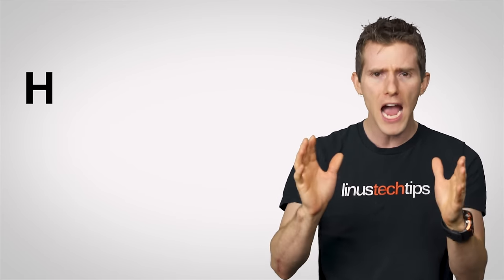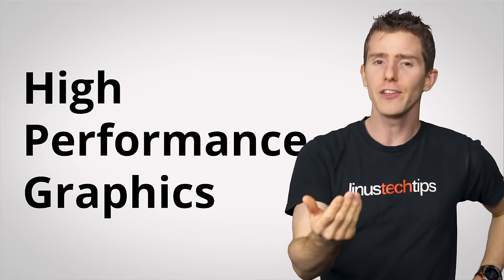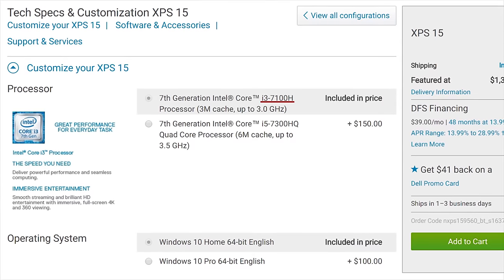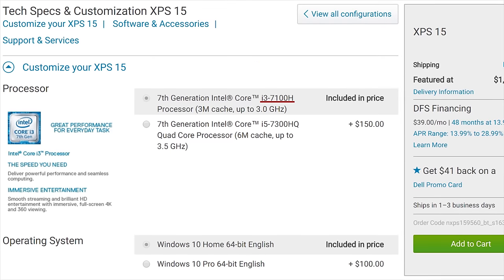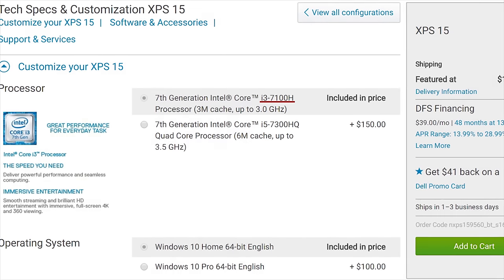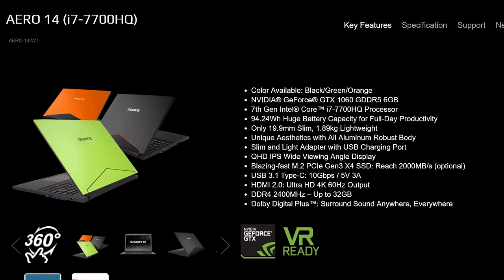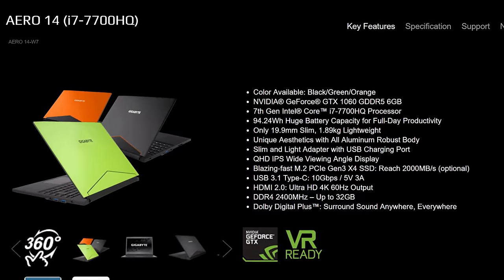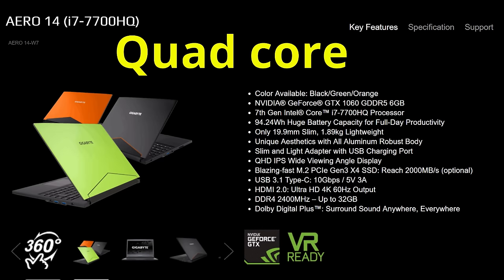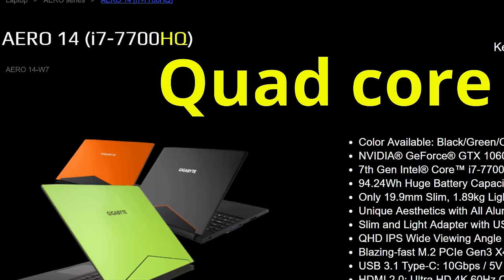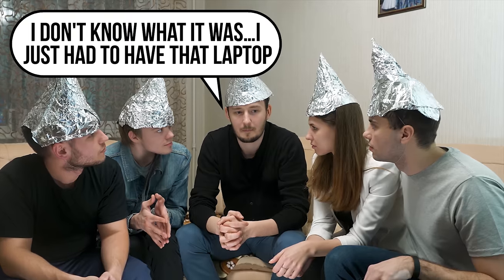Speaking of which, H officially stands for high-performance graphics and is used to designate Intel's higher-end offerings in the mobile segment that consume more power. Many of those higher-power chips also have a Q on the end — Q is for quad-core — so that's why you'll often see HQ on more expensive laptops. It is not a subliminal message intended to make you think that Intel notebooks are high quality.